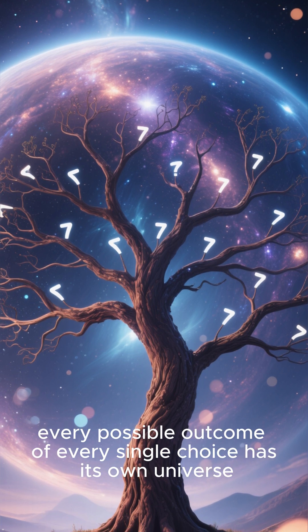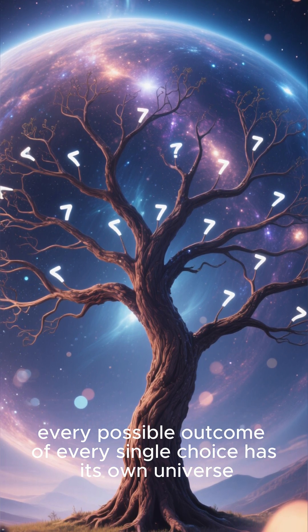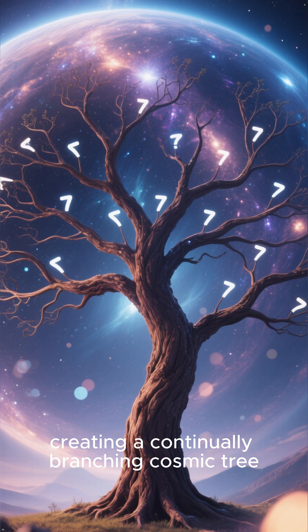the universe splits into multiple parallel realities. In this view, every possible outcome of every single choice has its own universe, creating a continually branching cosmic tree.